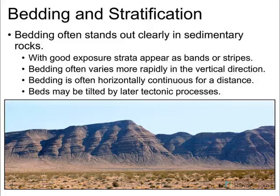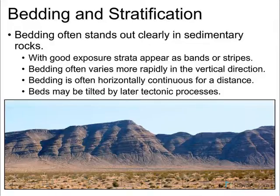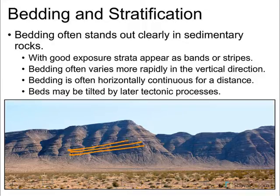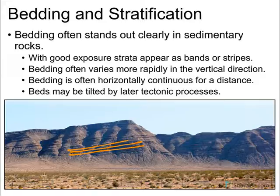Bedding is usually very obvious. When you take a look at this, it's pretty easy to see the layers running through this rock — different bands or stripes, sometimes different colors depending on the material. Usually bedding is horizontal unless it's been disturbed by plate tectonics. You can see here these are not exactly horizontal, so we know something happened to these rocks after they were initially deposited.